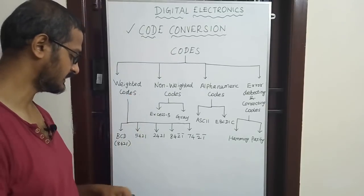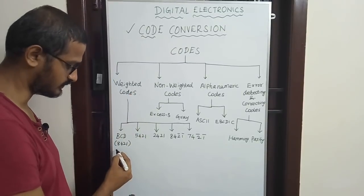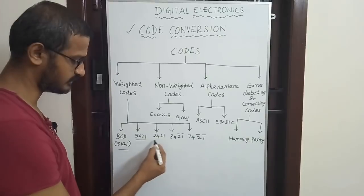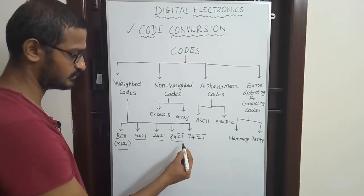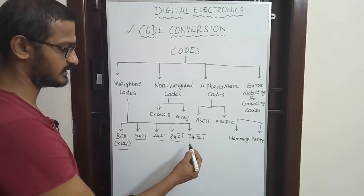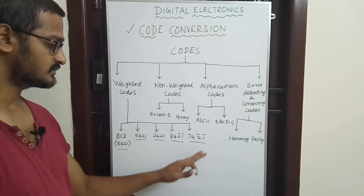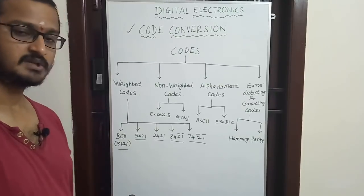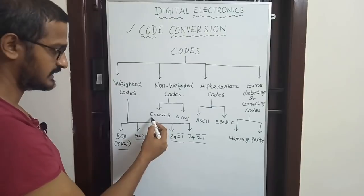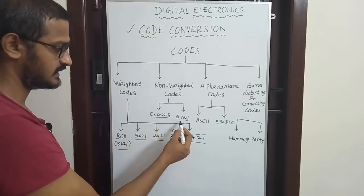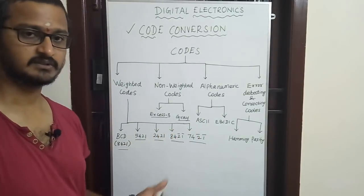Weighted Codes apply to binary codes: 8421, 5421, 2421, 842 2-bar 1-bar, and 742 1-bar. Non-weighted Codes include XS3 and Gray Codes.